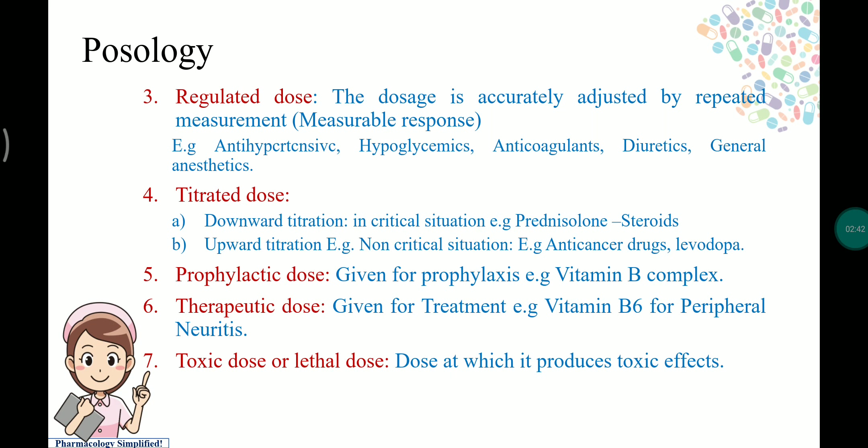For example, in hypertension, antihypertensives are given to decrease blood pressure to the normal value of 120/80. Similarly, hypoglycemics are used in diabetes to bring sugar levels down to normal. These are regulated doses, accurately adjusted to achieve a measurable response. Next is titrated dose — there are two types: downward and upward titration.